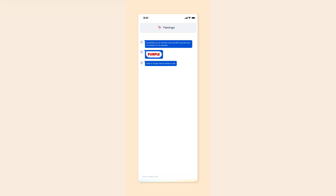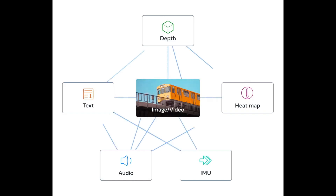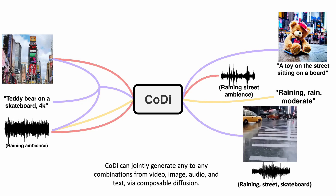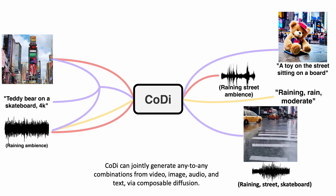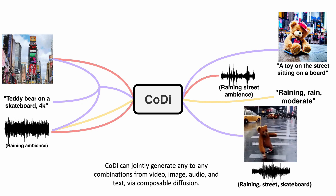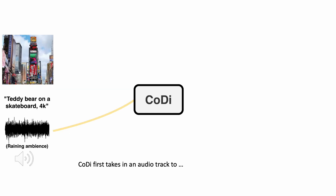Now there are models that can take several modalities and generate text, audio, heat maps, images, and more. They are called any-to-any models. Popular examples of such models are NextGPT and Meta's ImageBind.